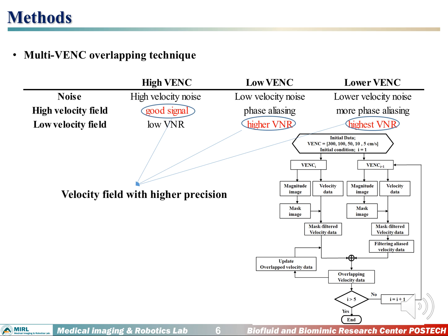Our method is called multi-VENC overlapping. It is very simple: we measure the flow field with multiple VENC parameters. High VENC measurement provides good signal at the high velocity field, but low VNR at the low velocity field. While low VENC measurement has phase aliasing at the high velocity field, it provides higher VNR at the low velocity region. By combining all the good points from multiple VENC measurements, we can reconstruct a new velocity field with higher precision.